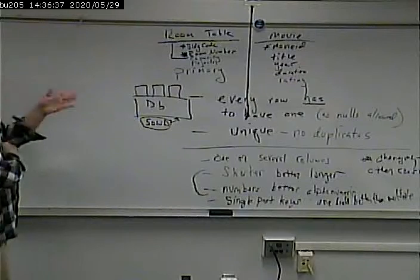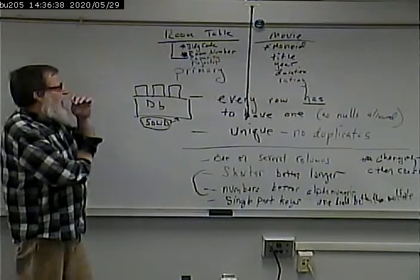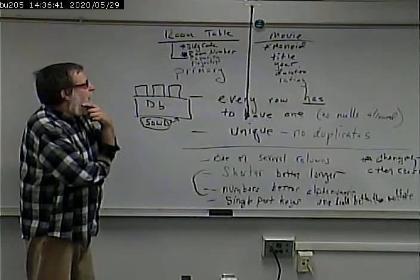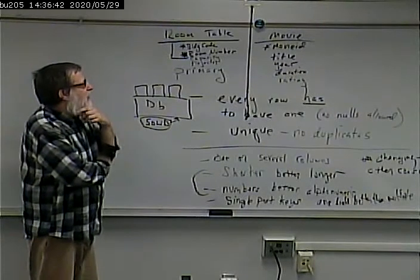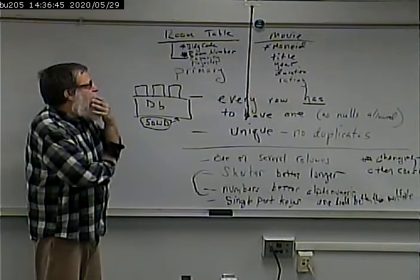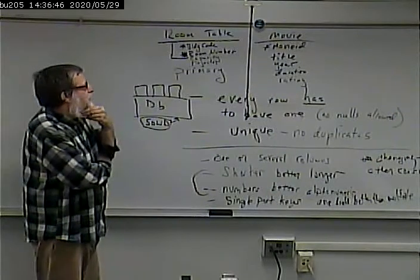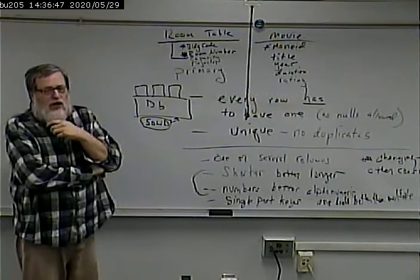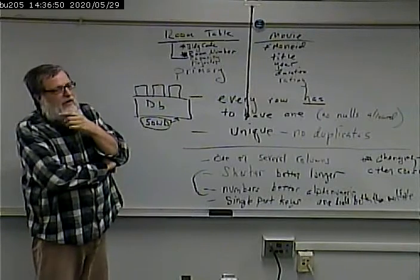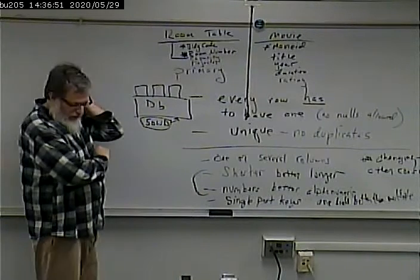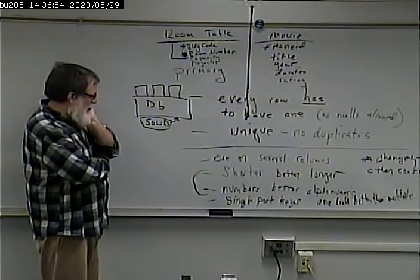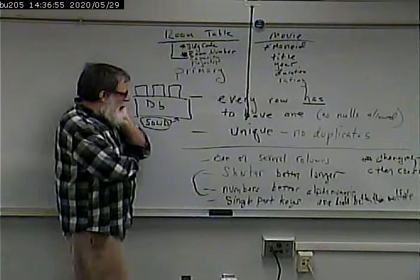We'll be talking about implementing this in a minute. In Access, a surrogate key is called an auto number field or auto number key. We'll take a look at implementing this in Access in a minute.